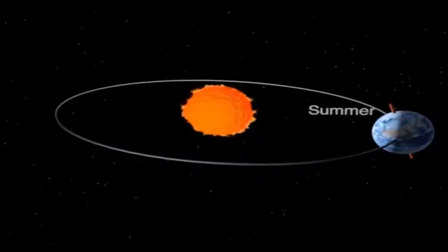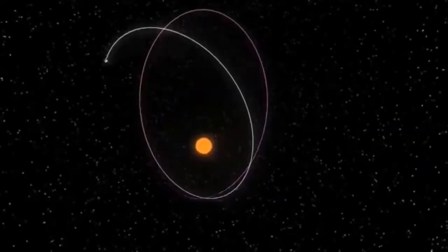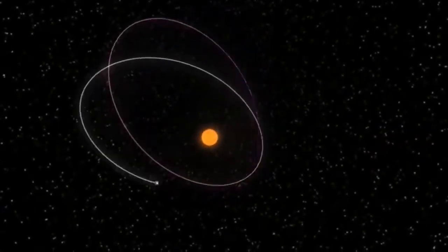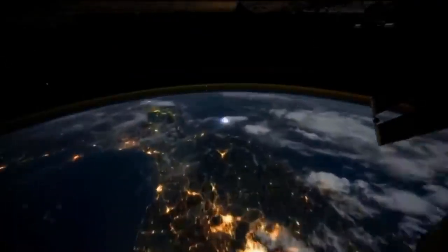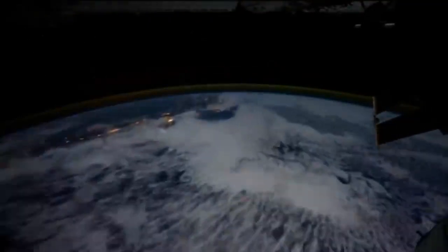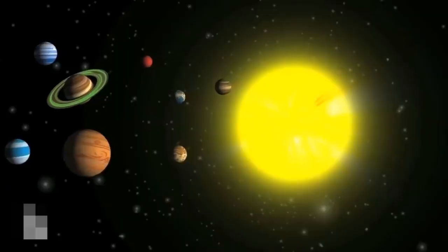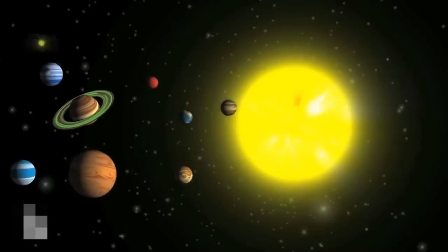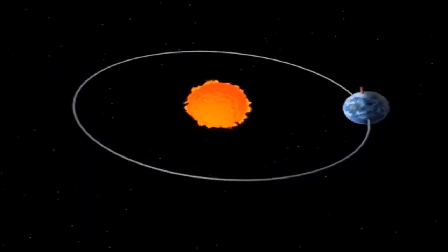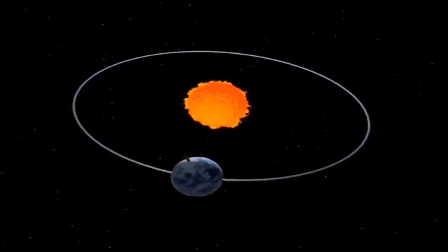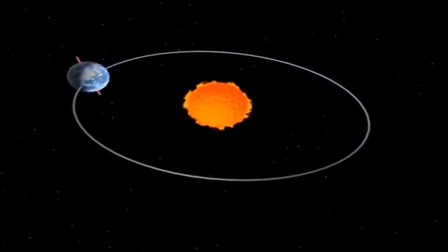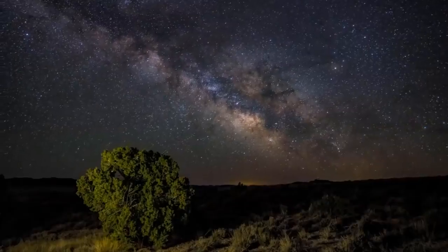Earth's elliptical orbit has nothing to do with Earth's seasons. During one revolution around the Sun, Earth travels at an average distance of about 150 million kilometers. Earth revolves around the Sun at an average speed of about 27 kilometers per second. But the speed is not constant.